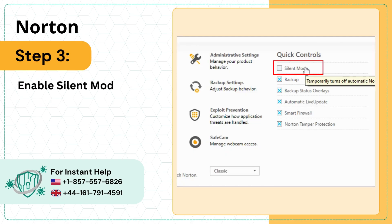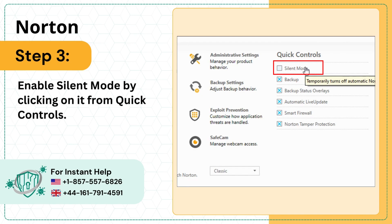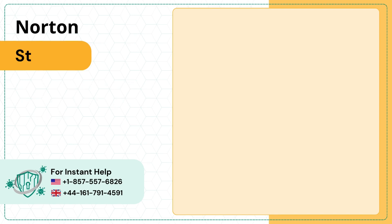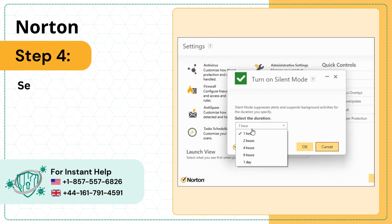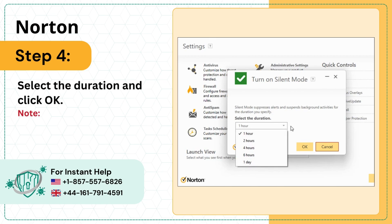Step 3: Enable Silent Mode by clicking on it from Quick Controls. Step 4: Select the Duration and click OK.